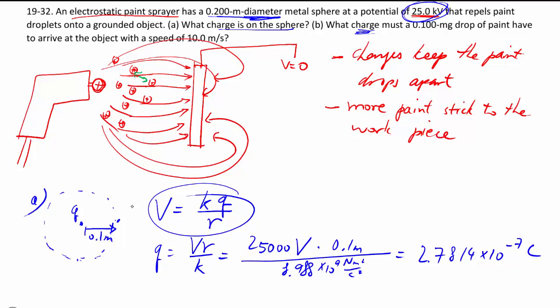Part A is about the charge that's making the electric potential. And what charge must that have in order for it to arrive at the object with a certain speed? Again, this is relating electrical potential to electrical potential energy to kinetic energy, finally getting a speed. Let's then draw a before and after picture. So you have a little drop of paint, which is over here, and then the drop of paint travels over here onto this work piece, which is attached to V equals zero.